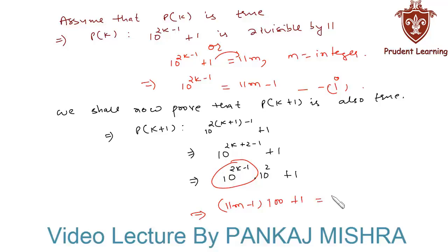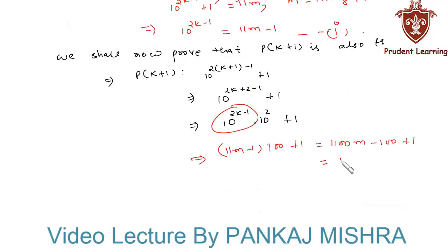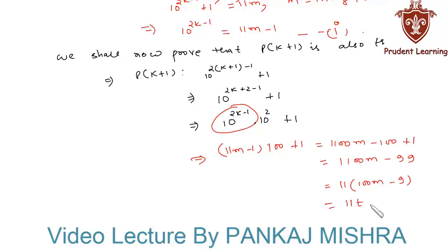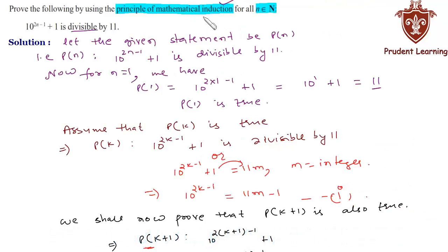This equals 1100m minus 100 plus 1, which is 1100m minus 99. Taking 11 common from both terms, we get 11 × (100m minus 9), which is 11 times t, where t equals 100m minus 9 is a natural number. Therefore, P(k+1) is true whenever P(k) is true. Hence, by the principle of mathematical induction, the statement P(n) is true for all natural numbers n.